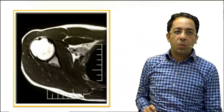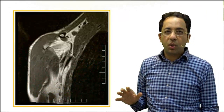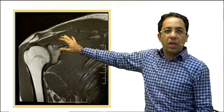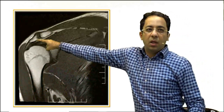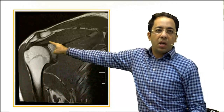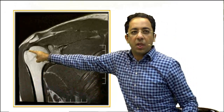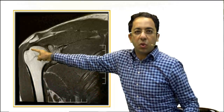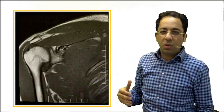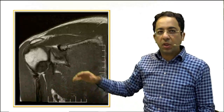The axial plane is useful, but the ideal plane for viewing the rotator cuff is the coronal plane. Let me show you the coronal anatomy. Again using the AC joint as a landmark, you can see the area of the supraspinatus. Notice how the muscle gives an intermediate signal, but as it converts into tendon the signal becomes darker — because tendon joins muscle to bone and appears dark on MRI.